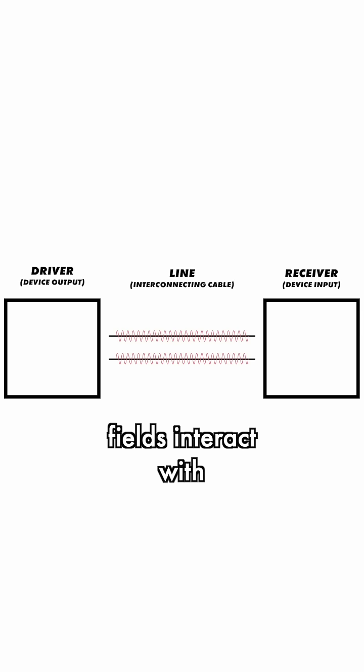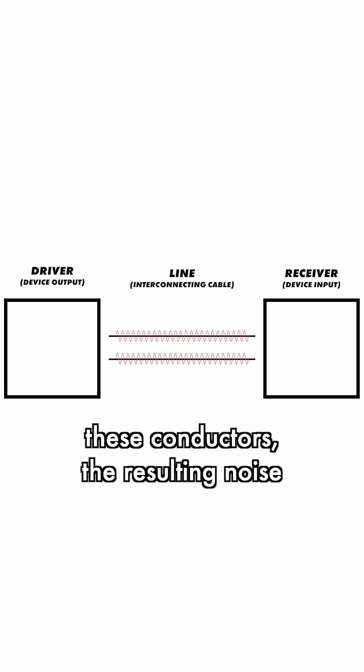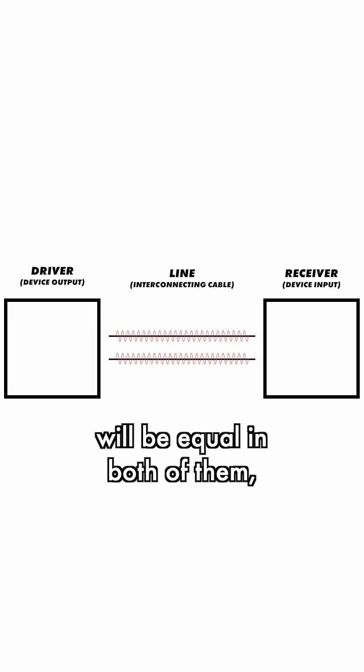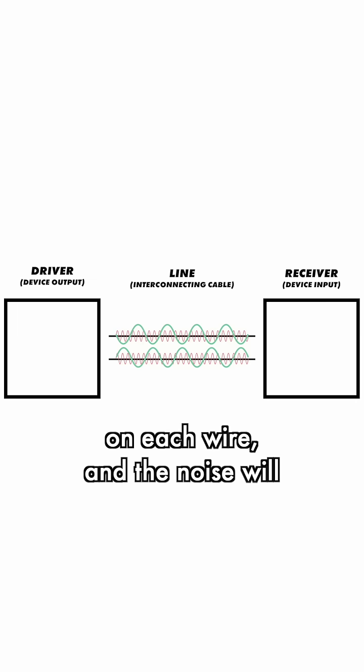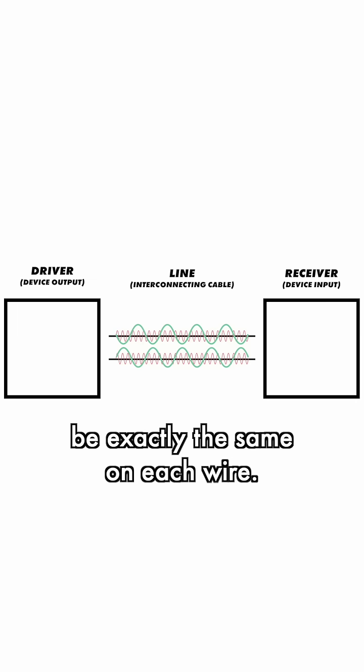However, when magnetic fields interact with these conductors, the resulting noise will be equal in both of them. So the signal will be exactly opposite on each wire and the noise will be exactly the same on each wire.